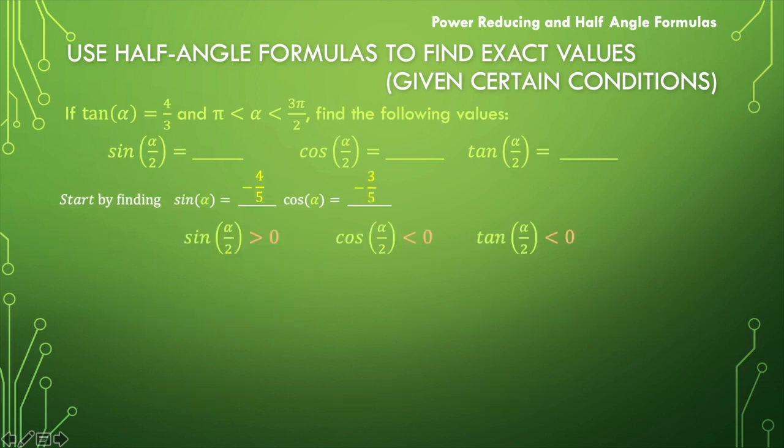Let's review what we know. Alpha is in the third quadrant. The sine of alpha is negative 4 over 5, the cosine of alpha is negative 3 over 5, and the tangent of alpha is 4 thirds. Alpha over 2 is in the second quadrant, where the sine of alpha over 2 is positive, while the cosine and the tangent are both negative. Now let's go to our formulas.